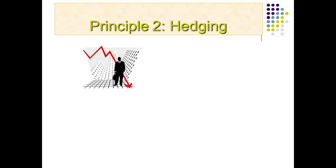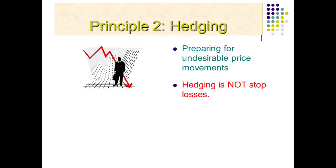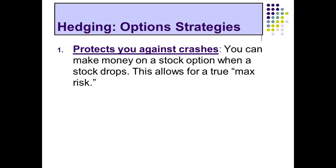That's diversification. Principle two is hedging — preparing for undesirable price movements. If you're invested in something like the S&P 500 index and you know there's a possibility of the market crashing but you're not sure when, you might want to hedge, just preparing for the worst. But hedging is not stop losses — it's not saying 'when the market hits a certain number, get out.' Hedging allows you to stay in the market. I'm going to show you how to use option strategies later in this course to hedge against bad market movements. This protects you against crashes and allows for a true maximum risk.